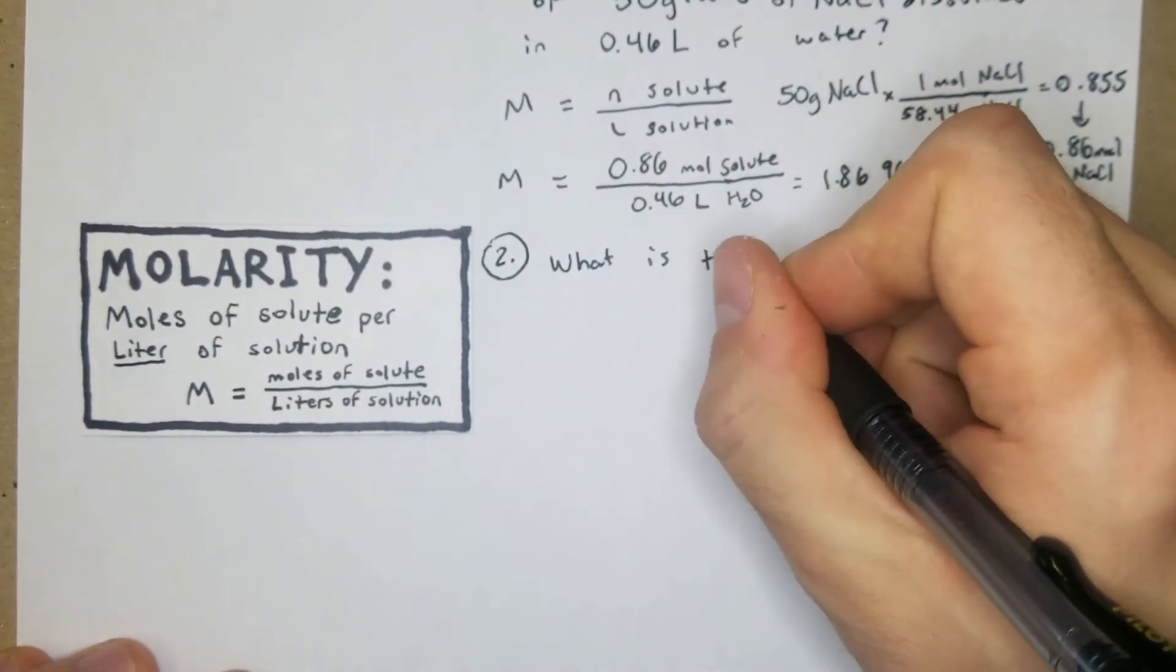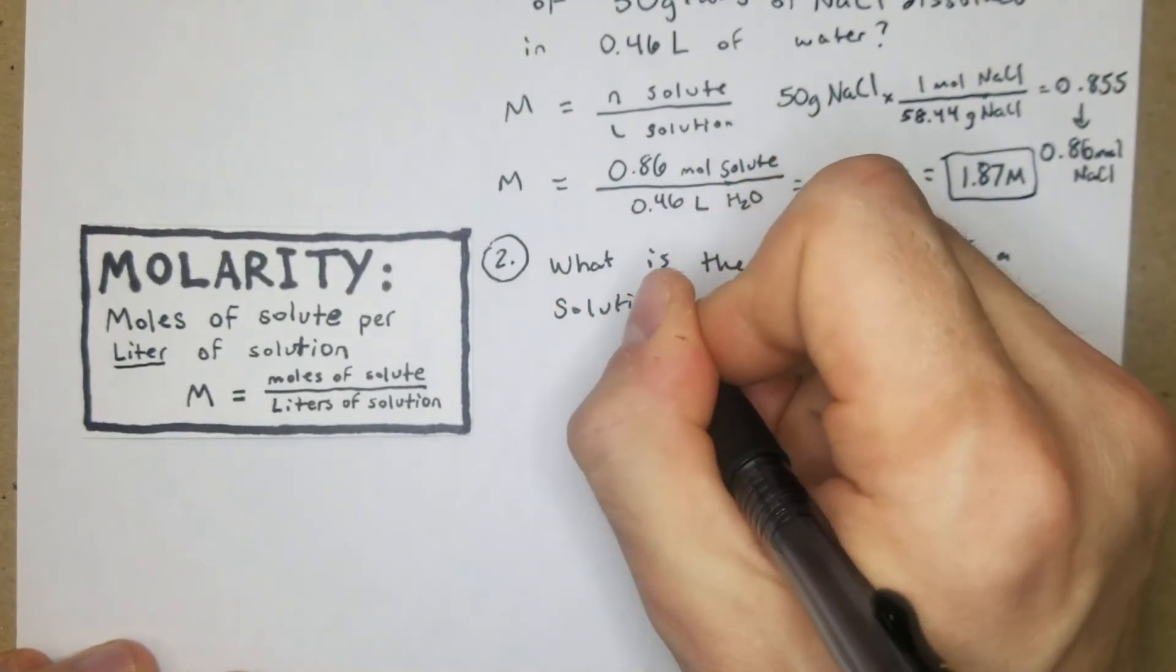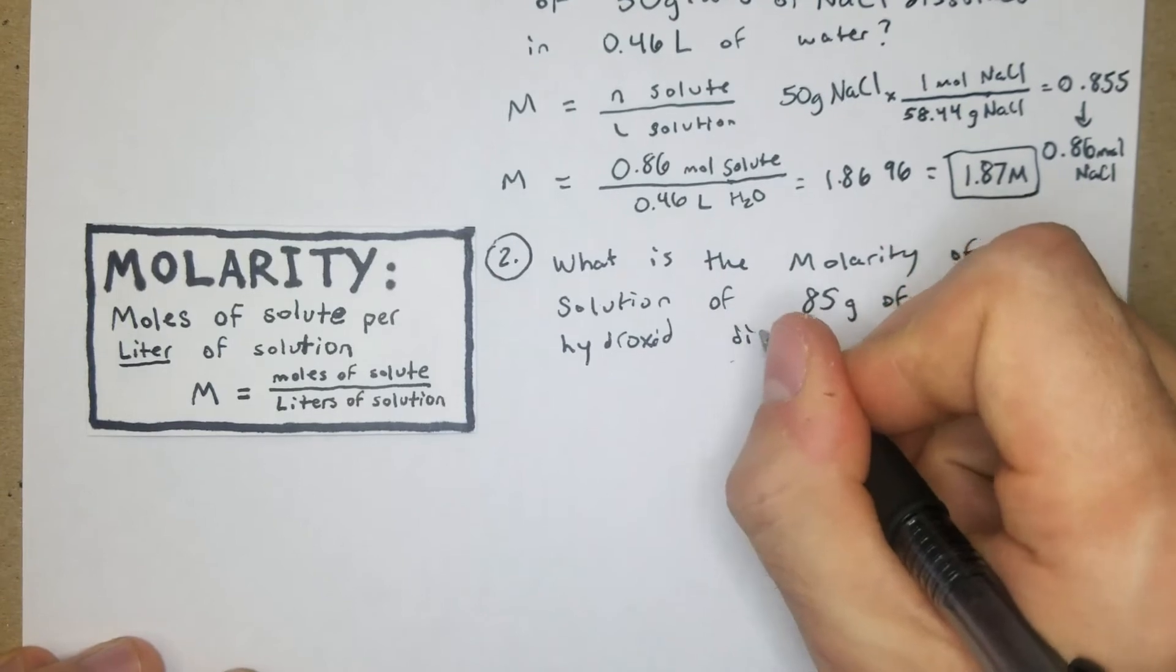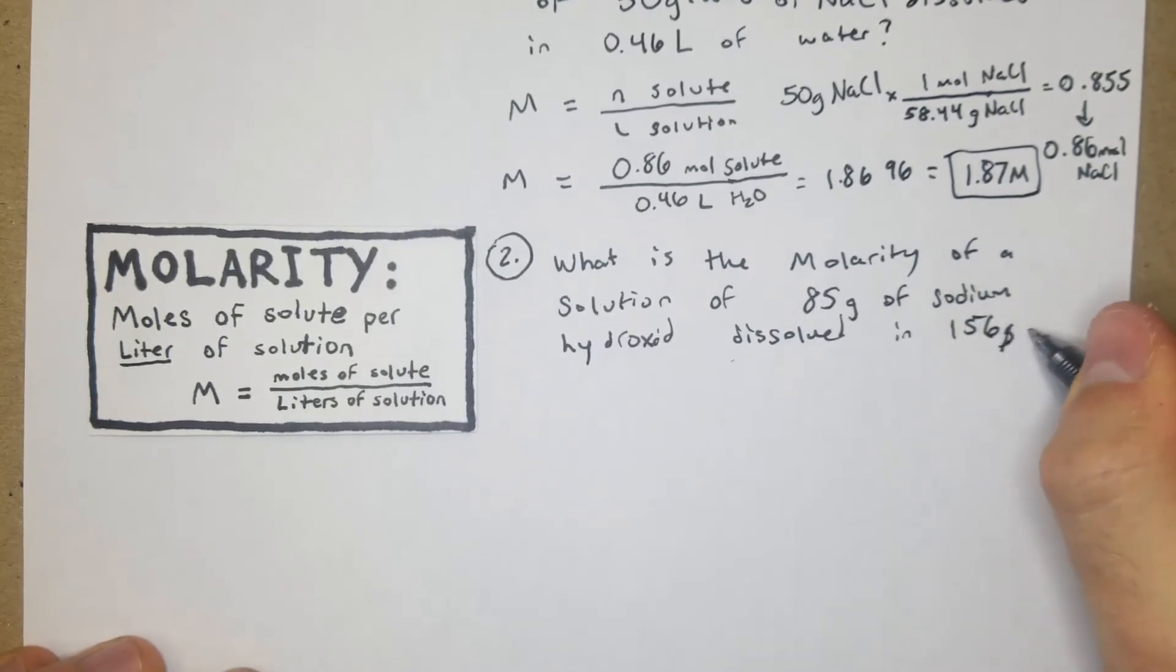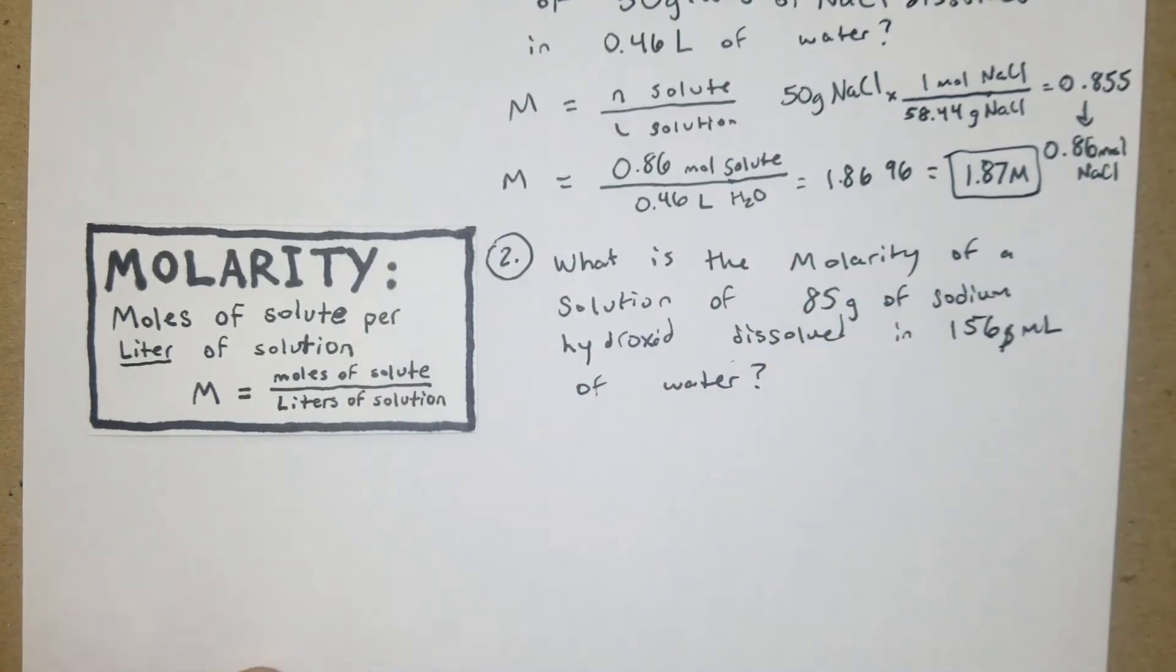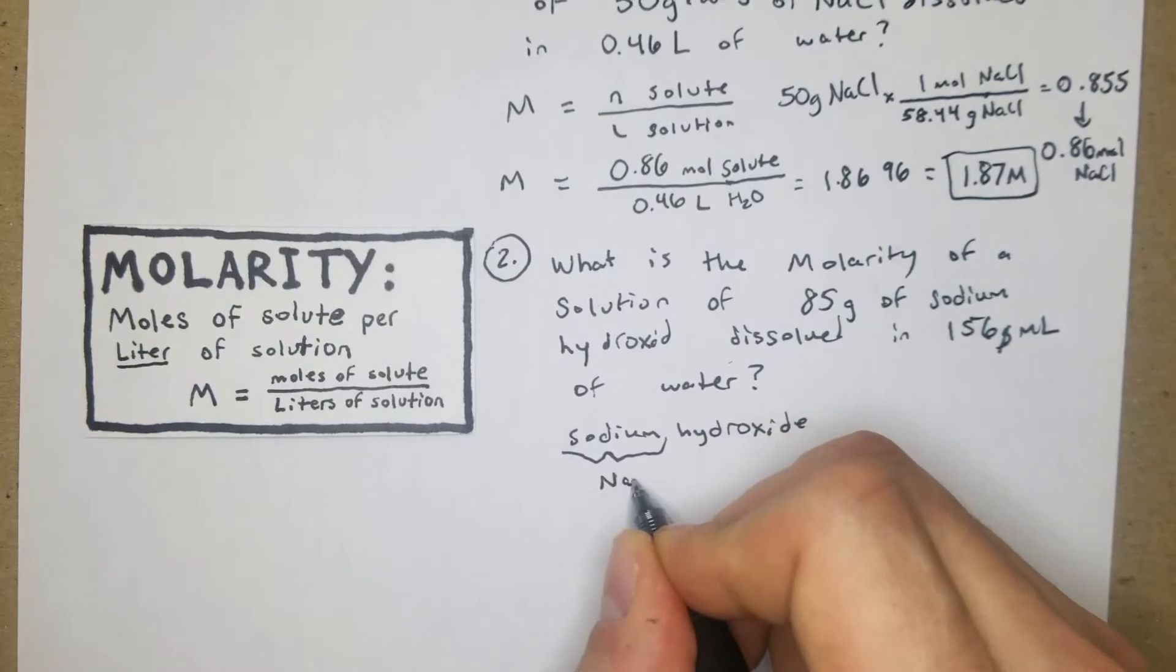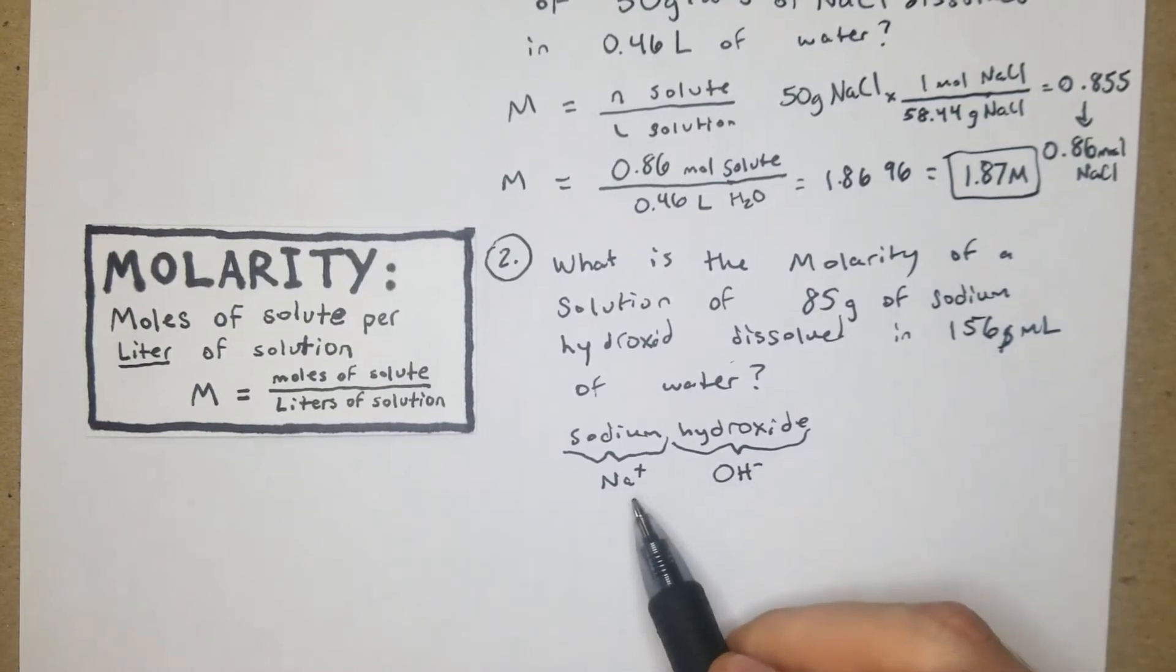Question two is going to be: What is the molarity of a solution of 85 grams of sodium hydroxide dissolved in 156 mL of water? First things first, let's see what we got. They're asking for sodium hydroxide - sodium we know is going to be Na+, and hydroxide is going to be OH-. Since this is a positive and this is a negative, we know it's going to be a one-to-one ratio to balance those charges.